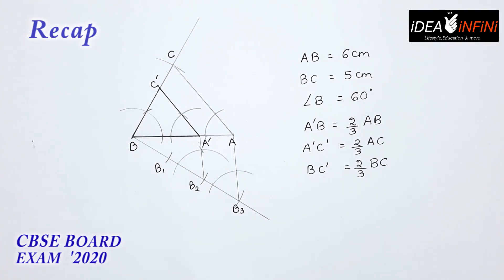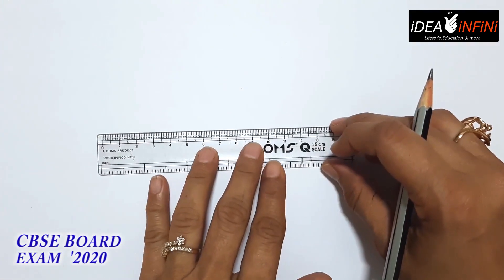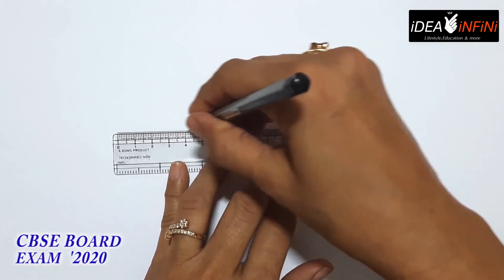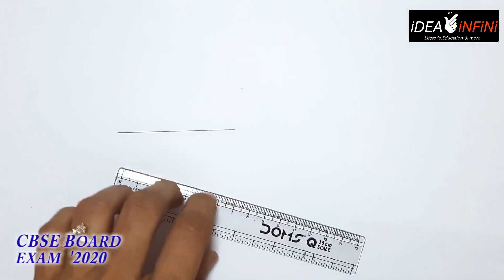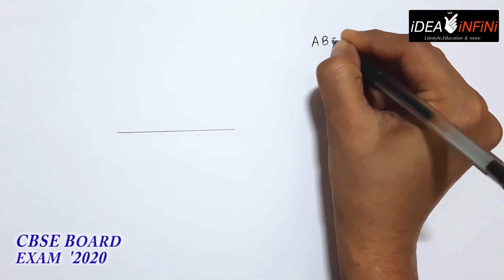एक और construction करेंगे जिसमें तीनों sides दी हुई हैं। Next question is: Construct a triangle with sides 5, 6 and 7 centimeters, now construct another triangle whose sides are 2/3 times the corresponding sides of the first triangle। यह बिल्कुल similar question है — हम इसका base 7 centimeters लेंगे।